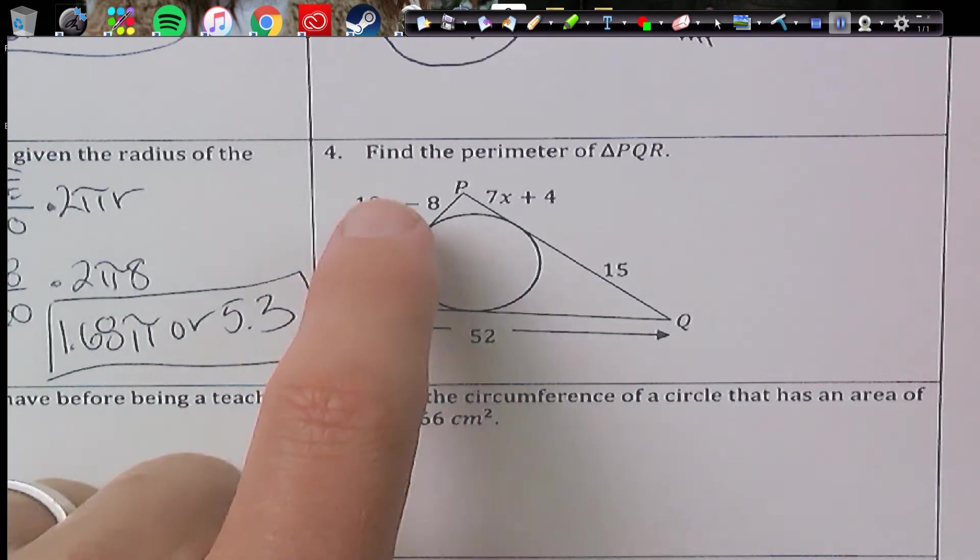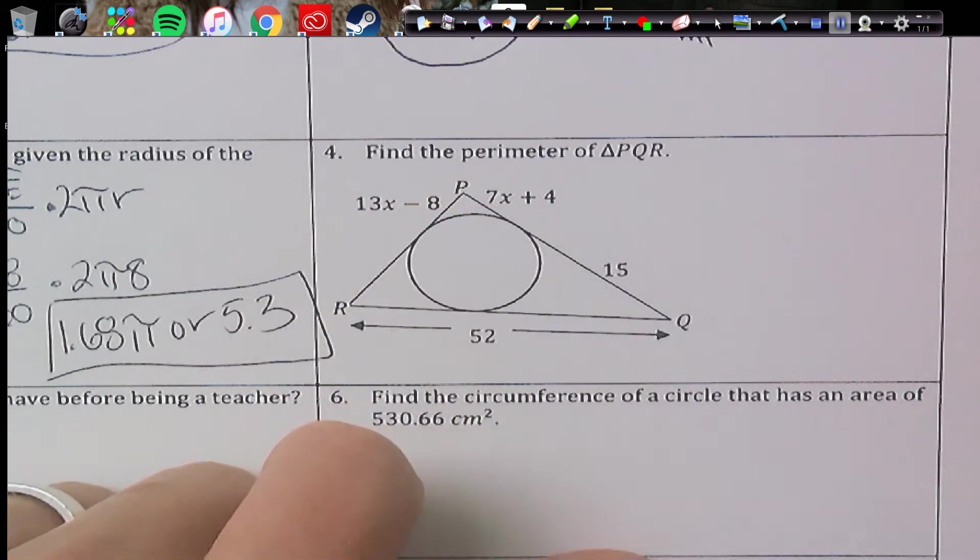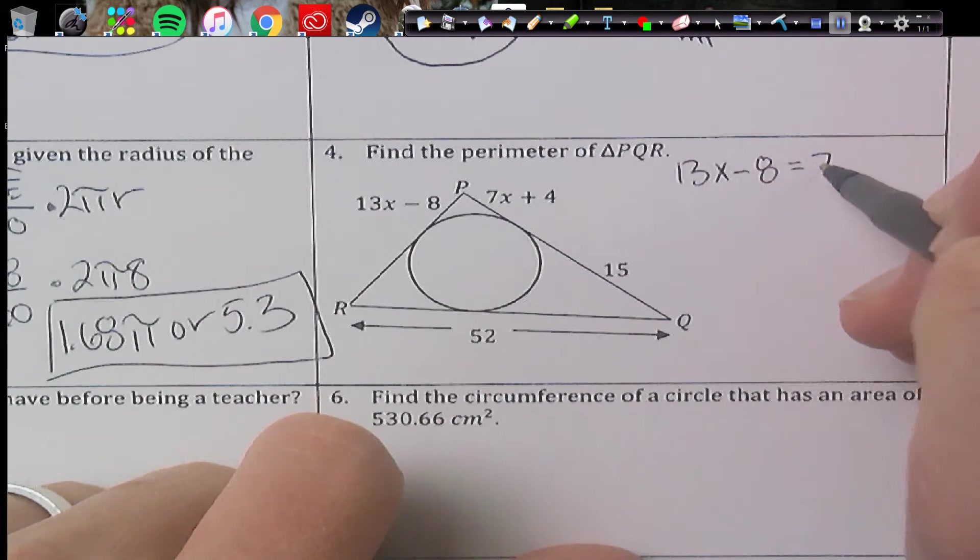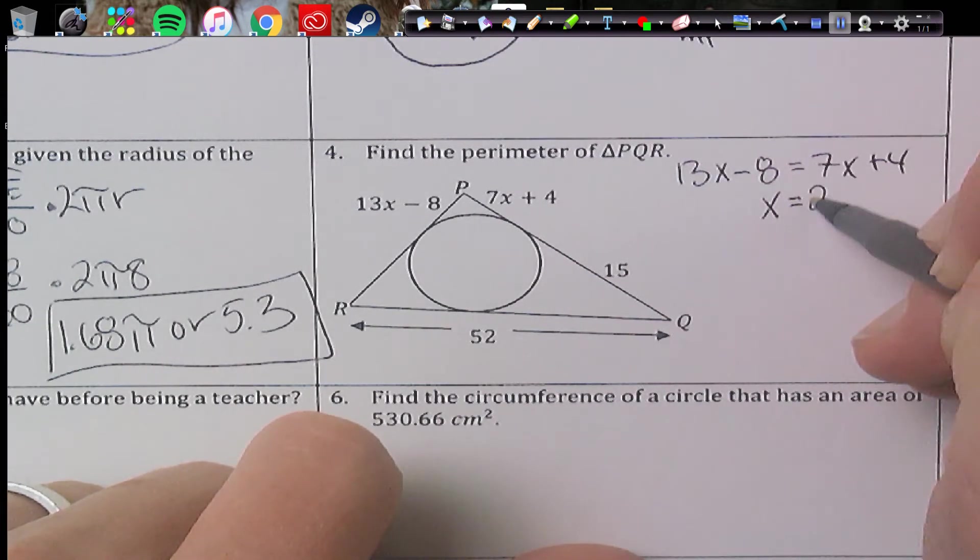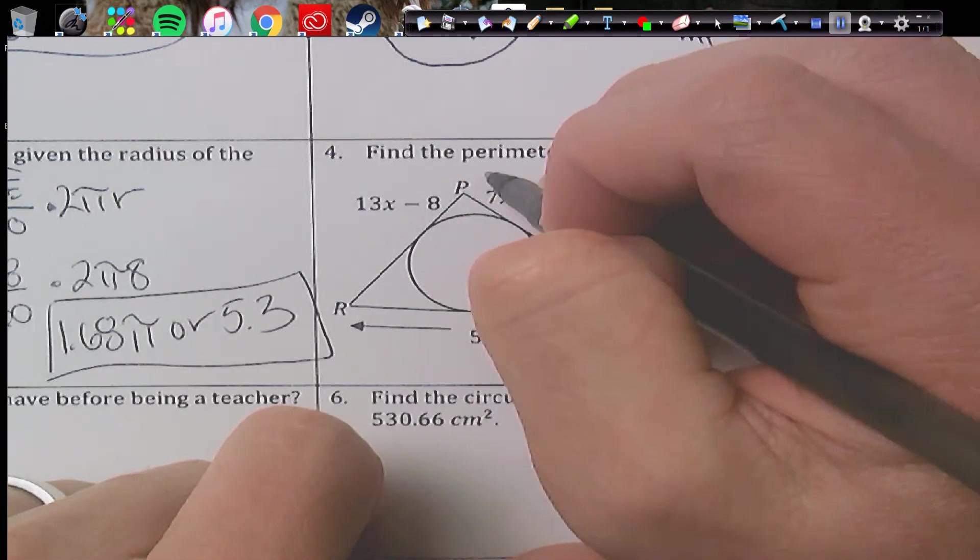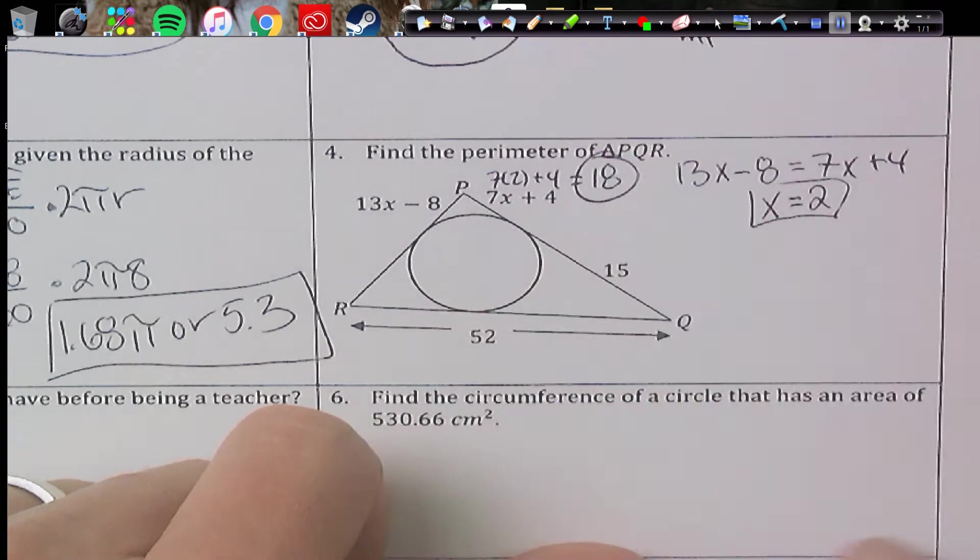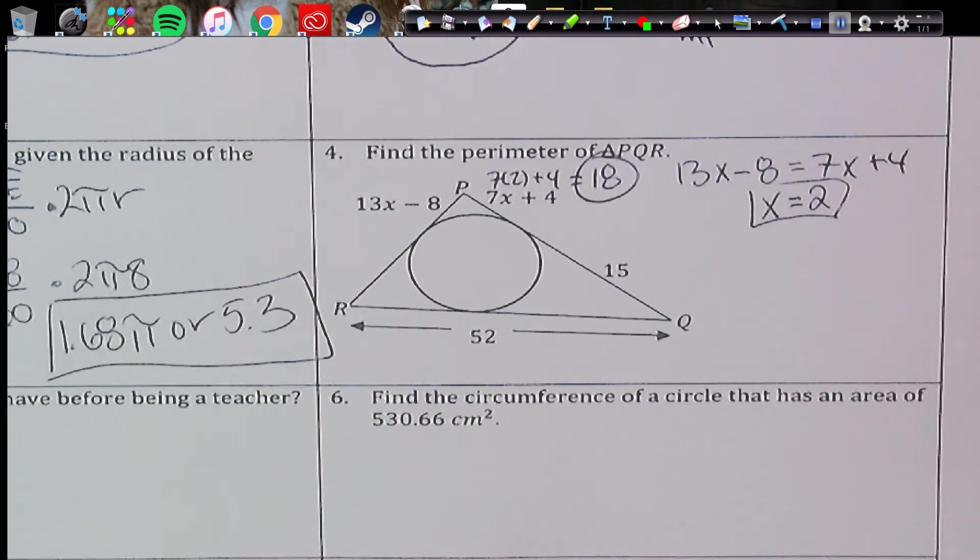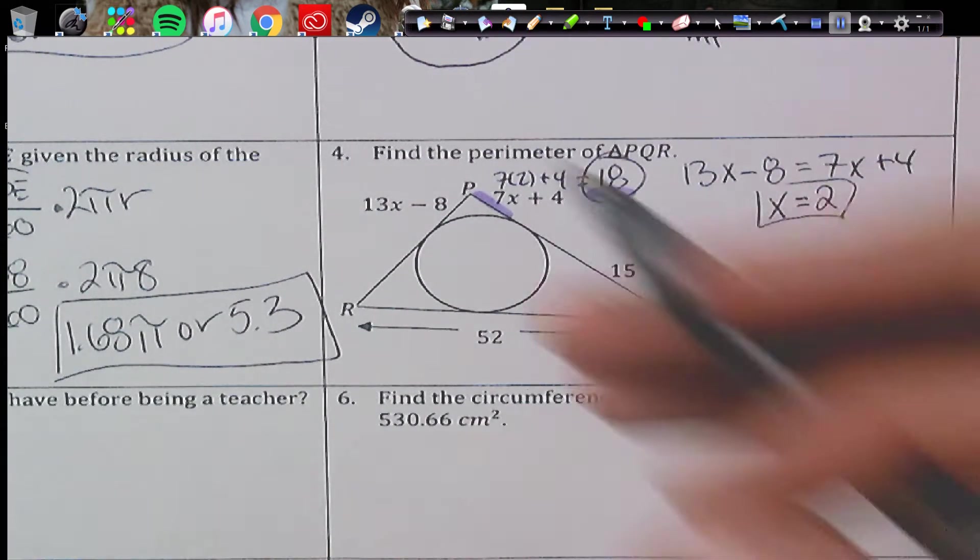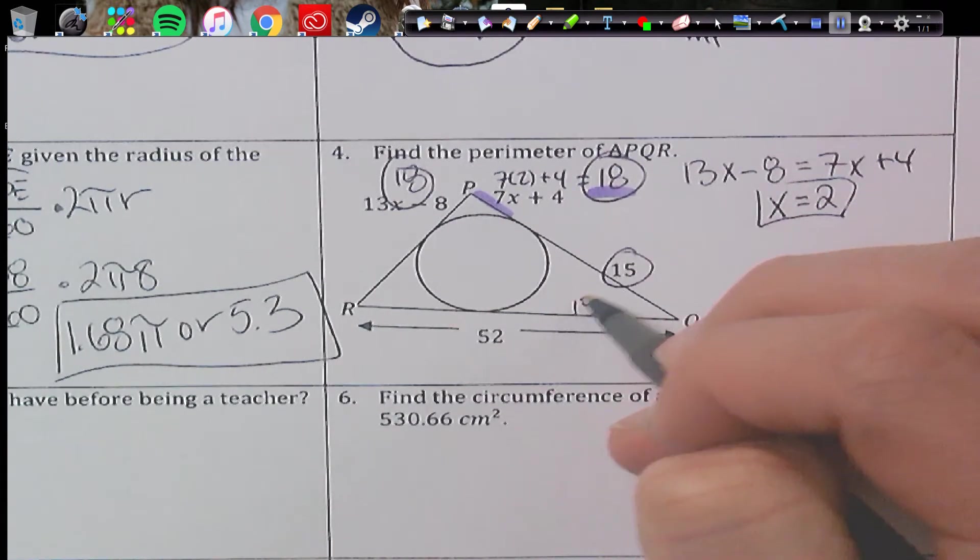Number four, we need to find x here. And since we have a common point with two tangent lines, we can actually set these equal to each other. And if you solve this correctly, you get x equals 2. And if you plug x back in, so 7 times 2 plus 4, you're going to get 18. So 18 becomes the segment right here, which means on the other side, you're also going to get 18.